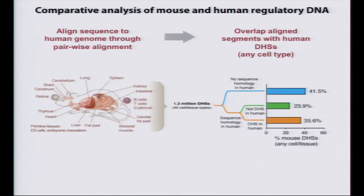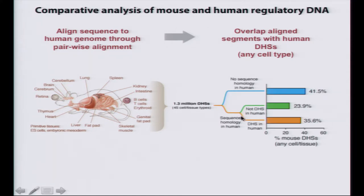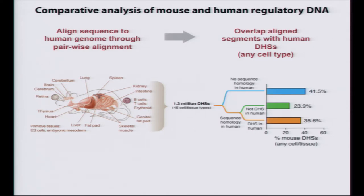Very globally, of this pool of about 1.3 million mouse DHSs, around 40% do not align to the human genome. These are not throwaway elements — they cluster around super-important mouse genes, turn on and off with them, and have all the properties of mouse regulatory elements; many have been studied in mouse, they just don't align to the human genome. About 33% align to the human genome and are also hypersensitive sites in some human tissue. And about 24% align to the human genome but are not hypersensitive in any tissue examined, suggesting they may have been evolutionarily extinguished.